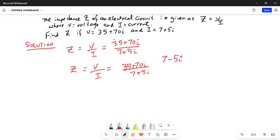we will multiply the numerator and the denominator by the conjugate or the opposite of 7 plus 5i, which is 7 minus 5i divided by 7 minus 5i. Because 7 minus 5i divided by 7 minus 5i is basically 1. So Z is now equal to 35 plus 70i multiplied by 7 minus 5i divided by 7 plus 5i multiplied by 7 minus 5i.